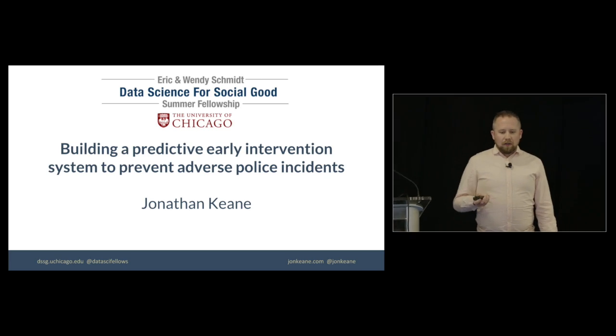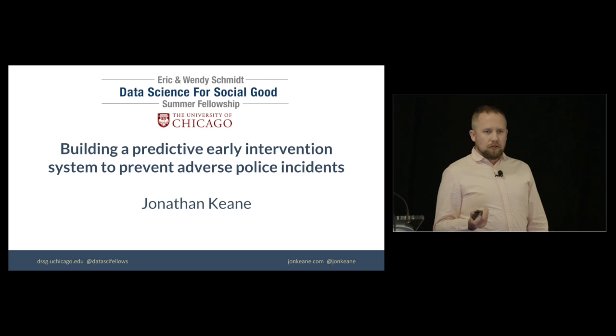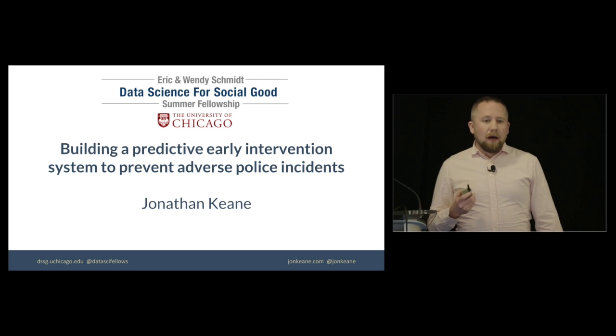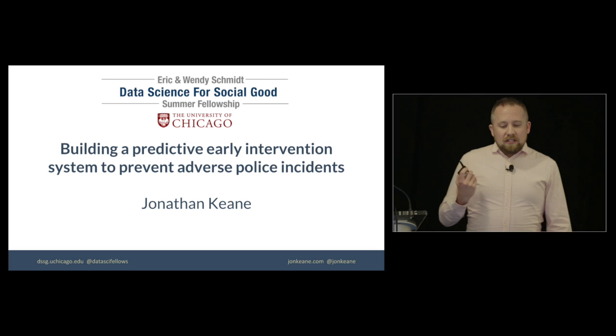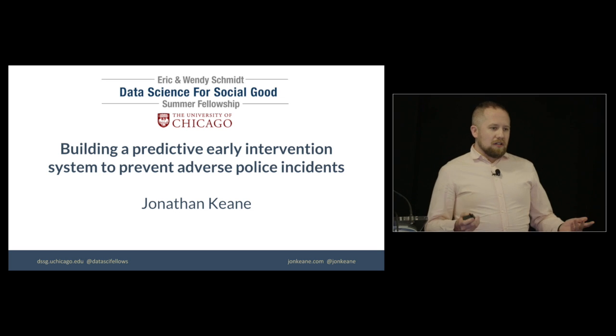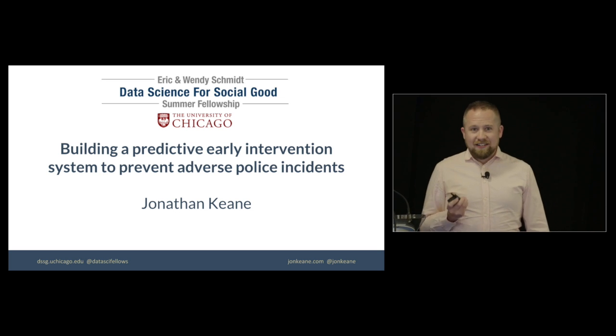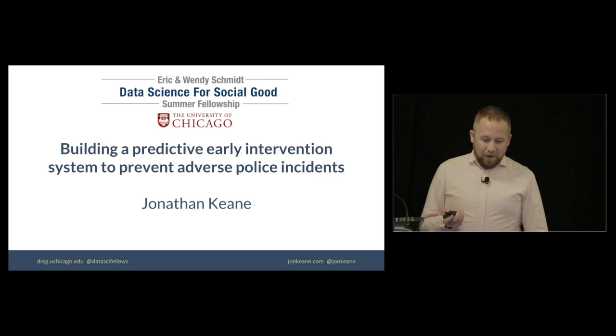So I'm going to be talking about a project that I worked on this summer with an organization called Data Science for Social Good, and we developed a model that would predict police officers who are at risk of having an adverse interaction with the public, which, as you can imagine, is an incredibly hot topic now.